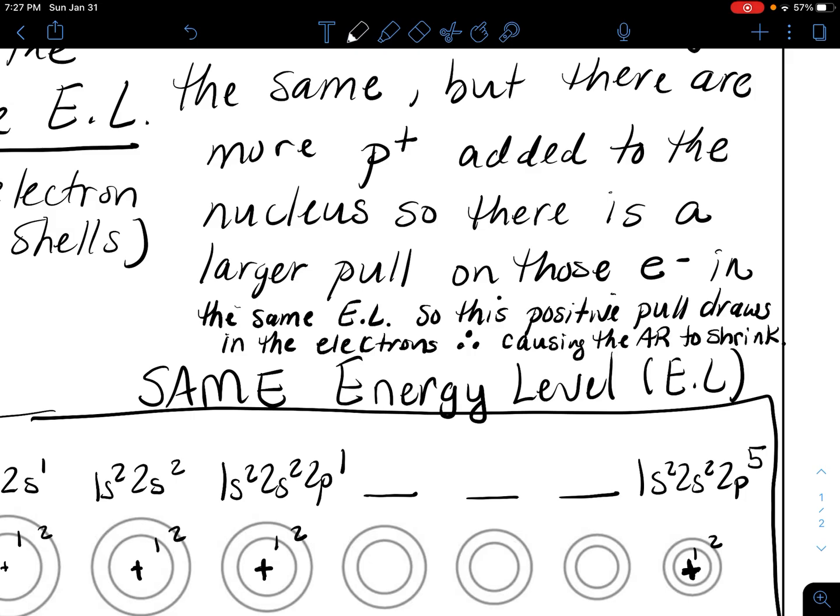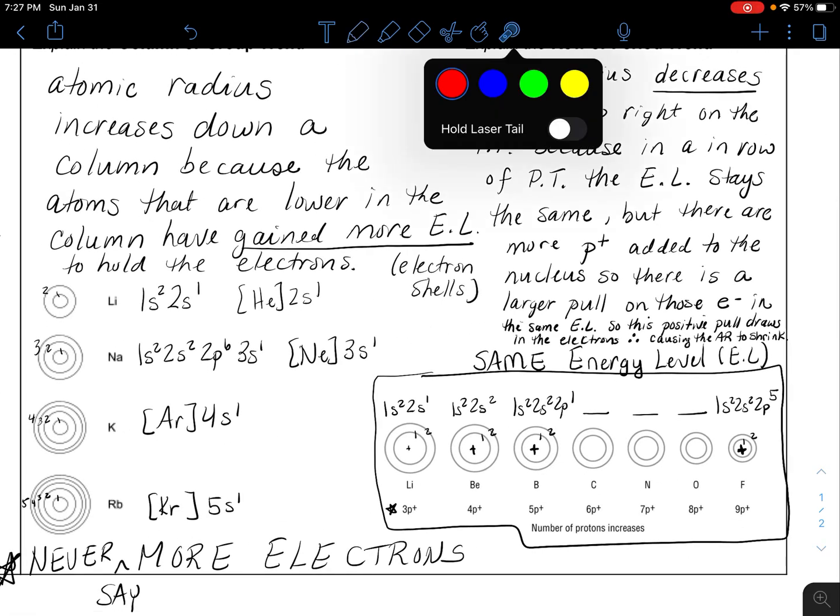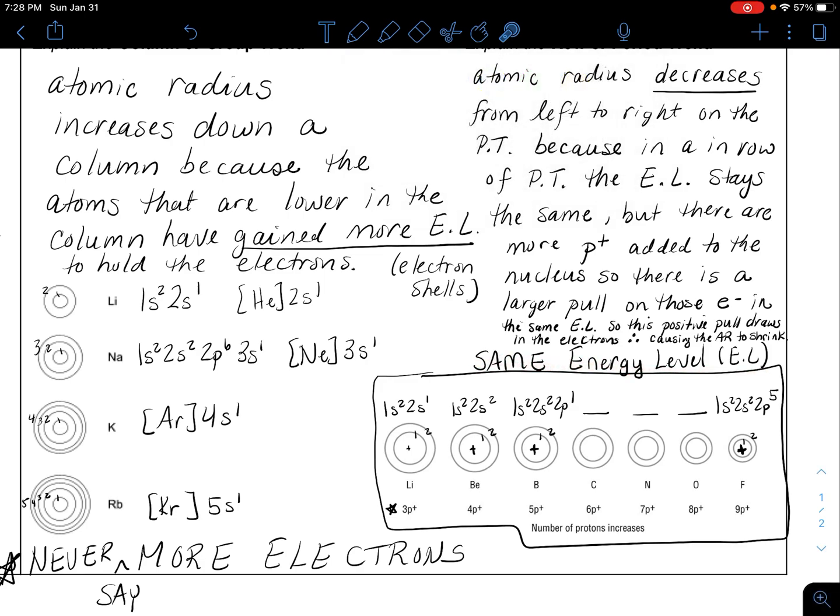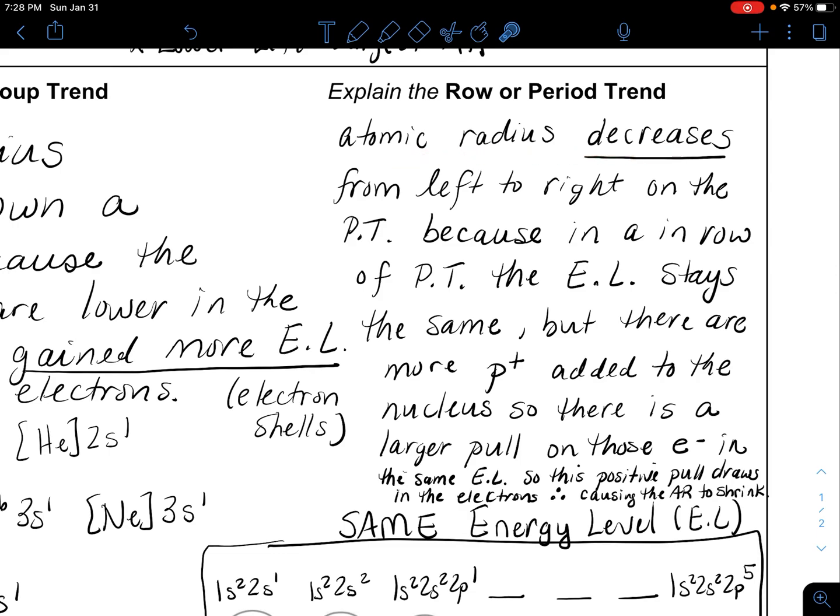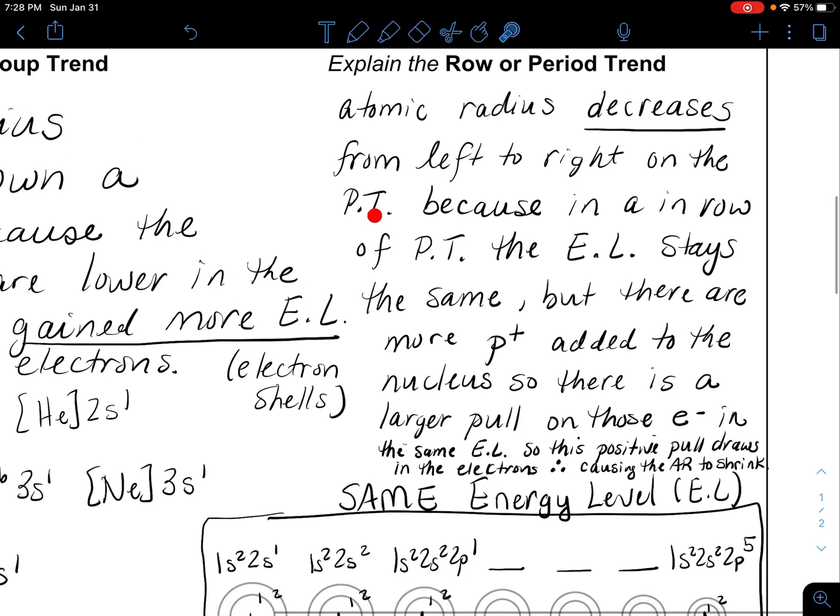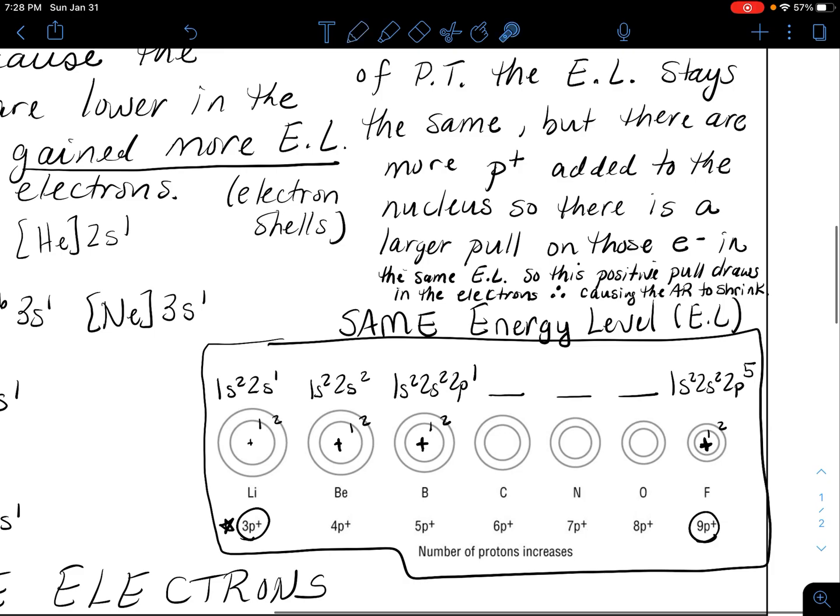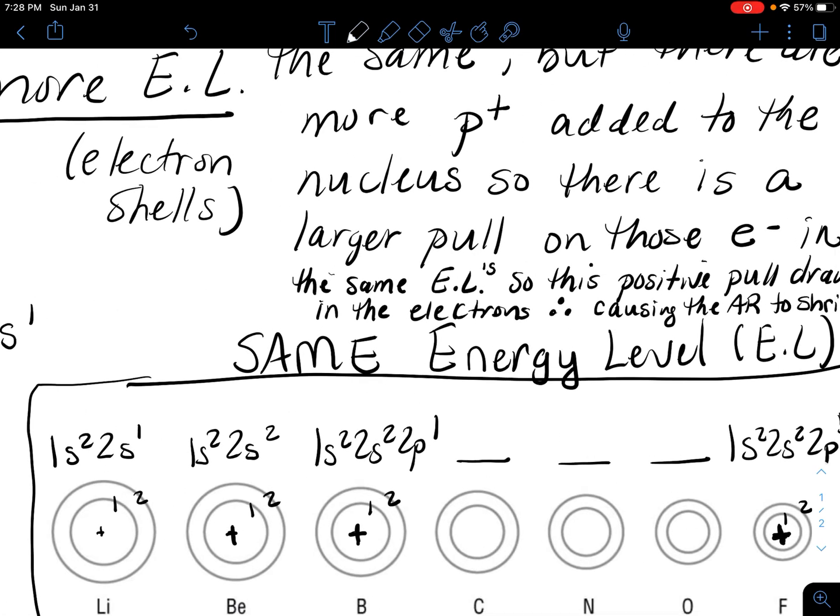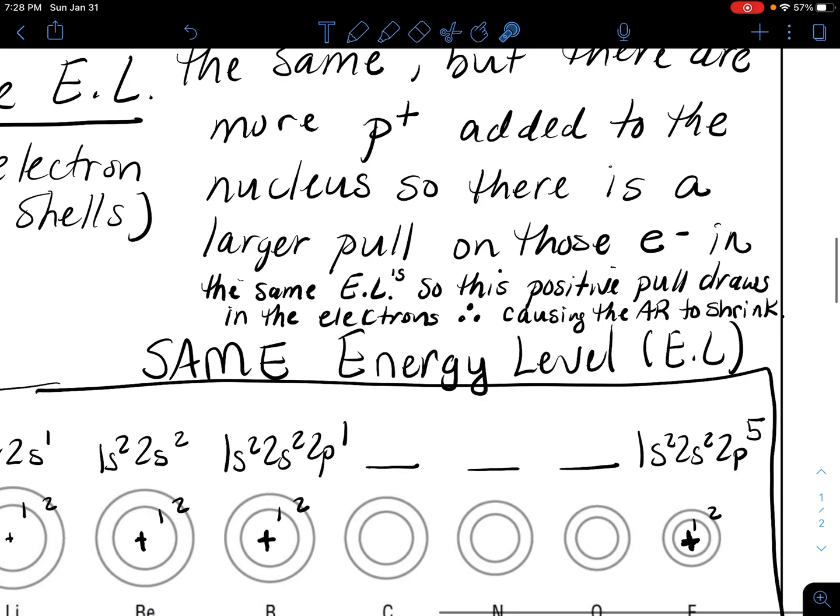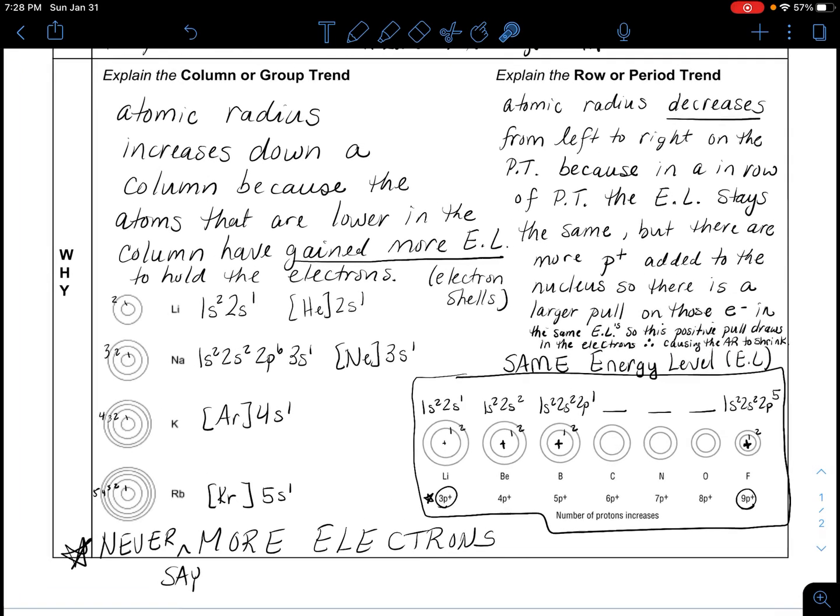Let's go through it one more time. As the atomic radius decreases from left to right on the periodic table because in a row of the periodic table the energy level will stay the same, it stays the same but there are more protons added to the nucleus. So there's a larger pull on all of the electrons that are in the same energy levels. This positive pull draws in all of the electrons causing the atomic radius to shrink.